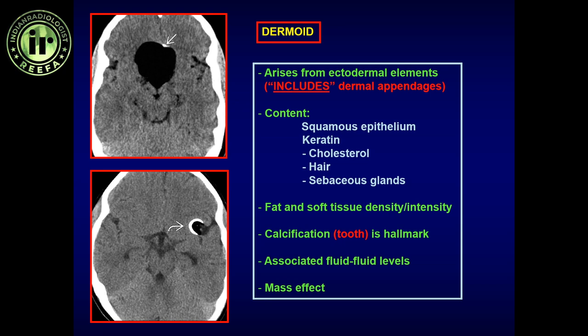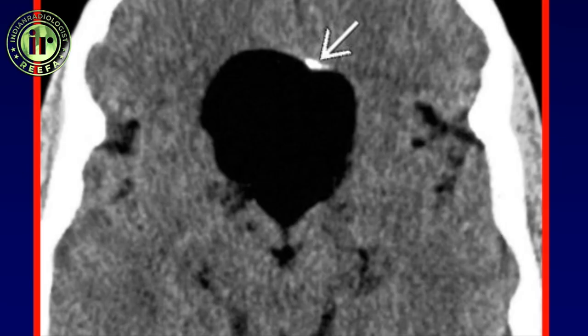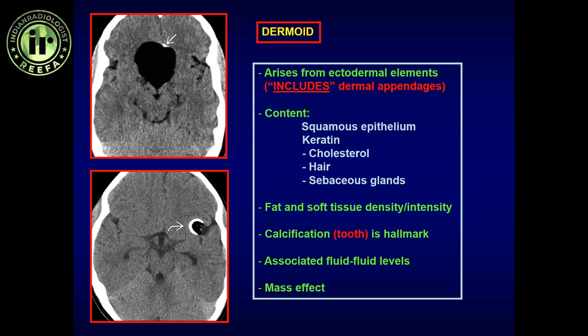On CT, the dermoid is classically a low-attenuation lesion with a fluid-fluid level related to debris. It can potentially have calcification — chunky, tooth-like, central, or circumferential peripheral calcification. If we see a tooth inside a low-attenuation lesion with a fluid-fluid level, that is the hallmark — unless proven otherwise, it is a dermoid cyst.